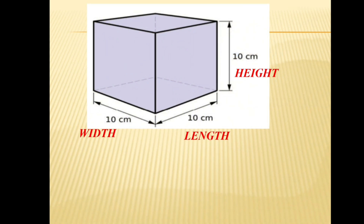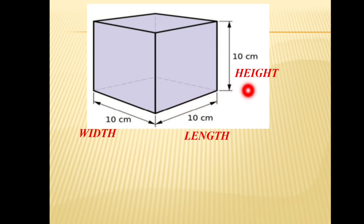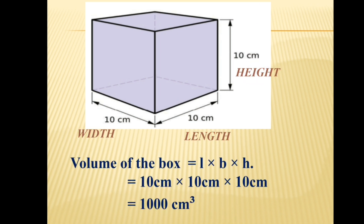Let's see an example for calculating the volume of a box. We have a box with three measurements: the length end to end is 10 centimeters, the width side to side is also 10 centimeters, and the height is also 10 centimeters. All parameters are measured in centimeters. Volume equals length times breadth times height, so we multiply 10 × 10 × 10, giving us 1000 cubic centimeters.